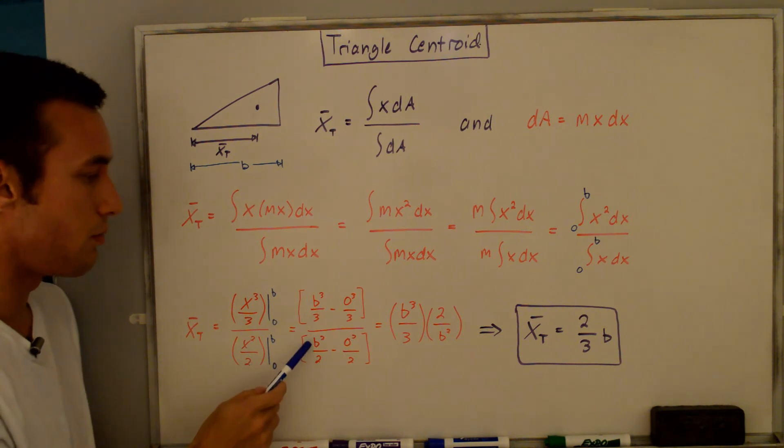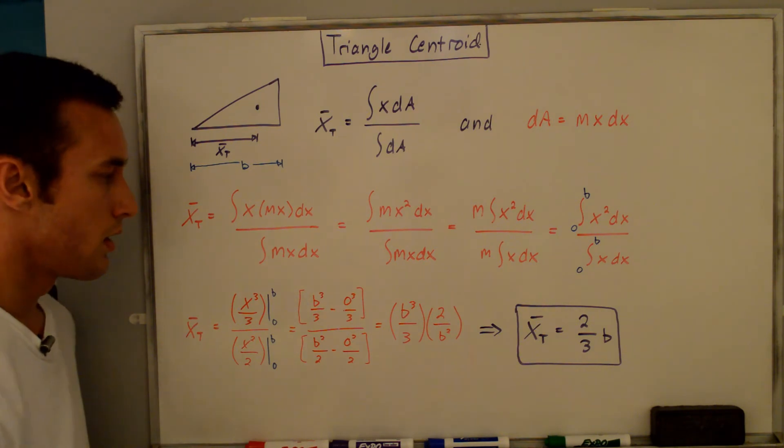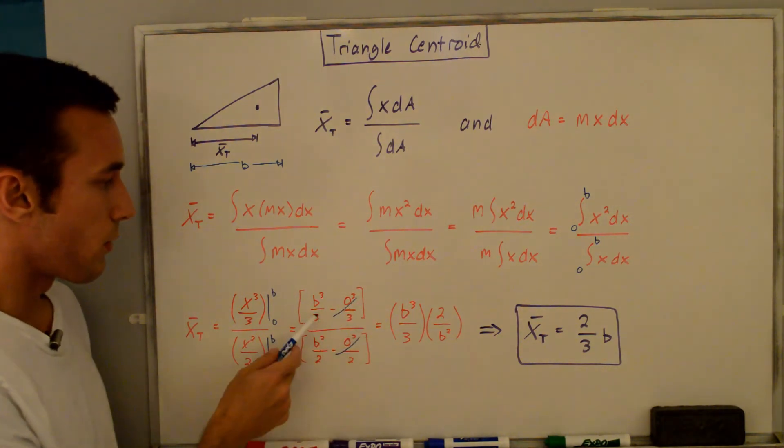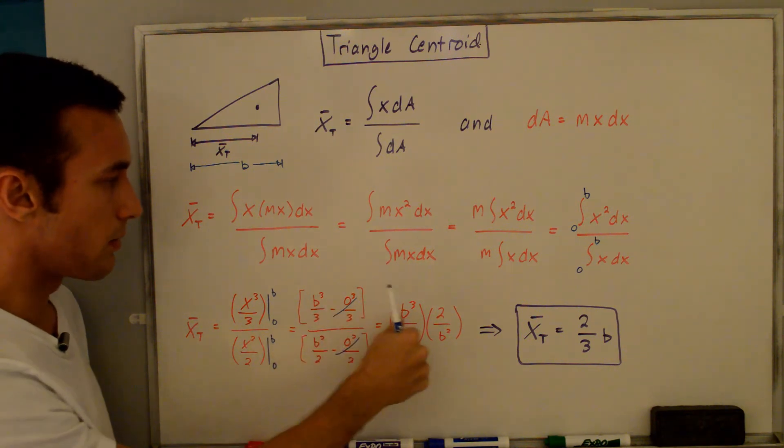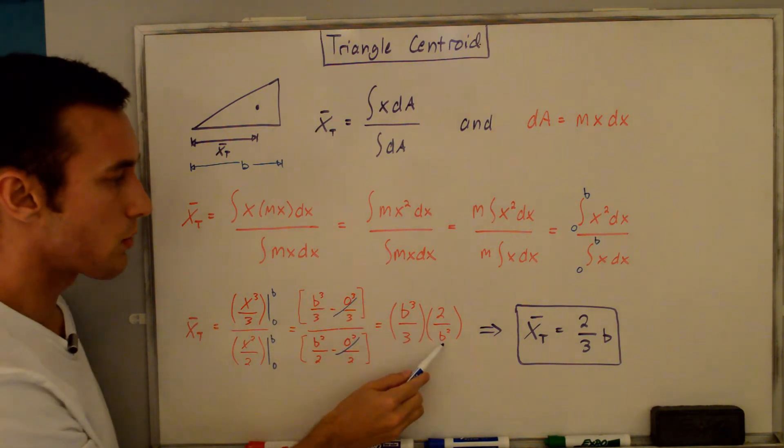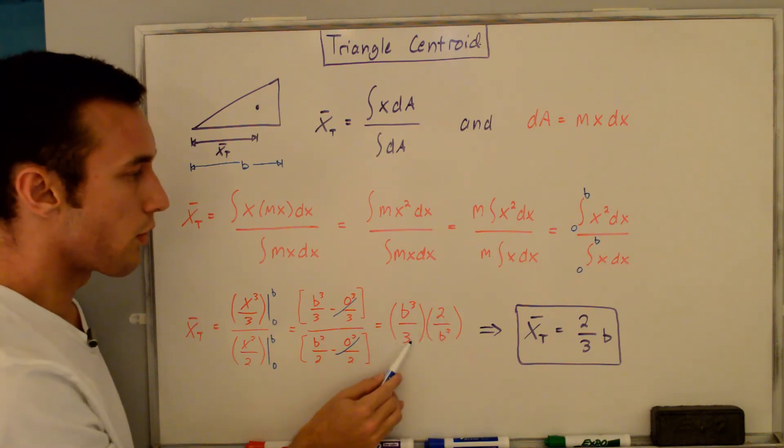In the denominator, b²/2 minus 0²/2. These zero terms cancel out. We're left with b³/3 over b²/2. Since this is in the denominator, I flip it to bring it to the numerator, so we get 2/b². The b³ divided by b² simplifies to b, and we're left with 2/3.